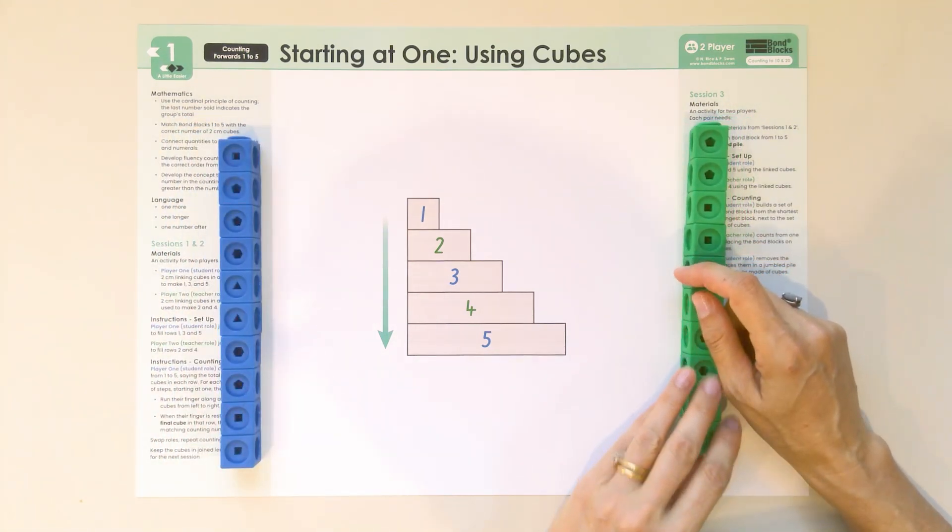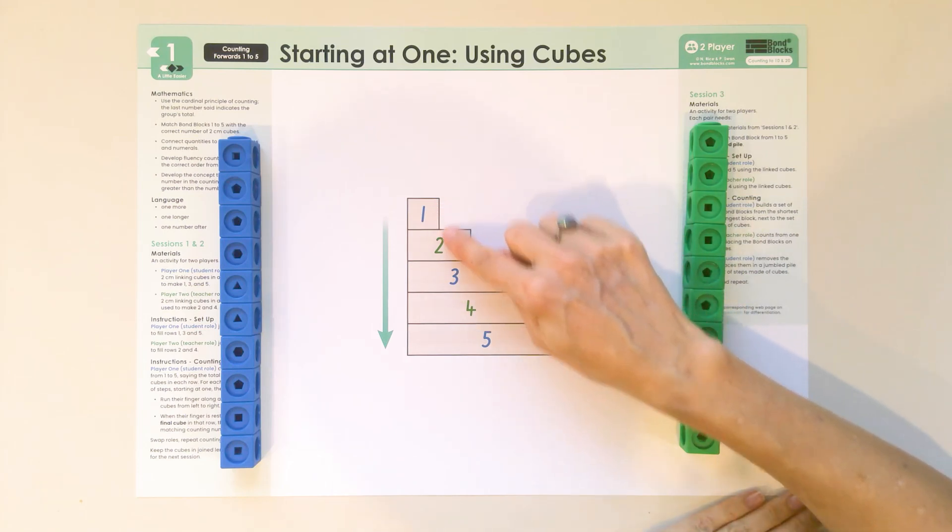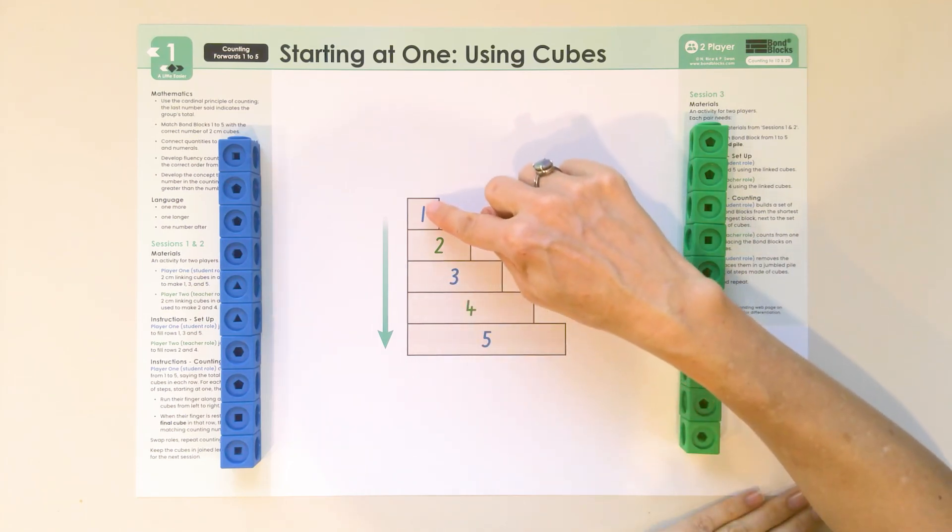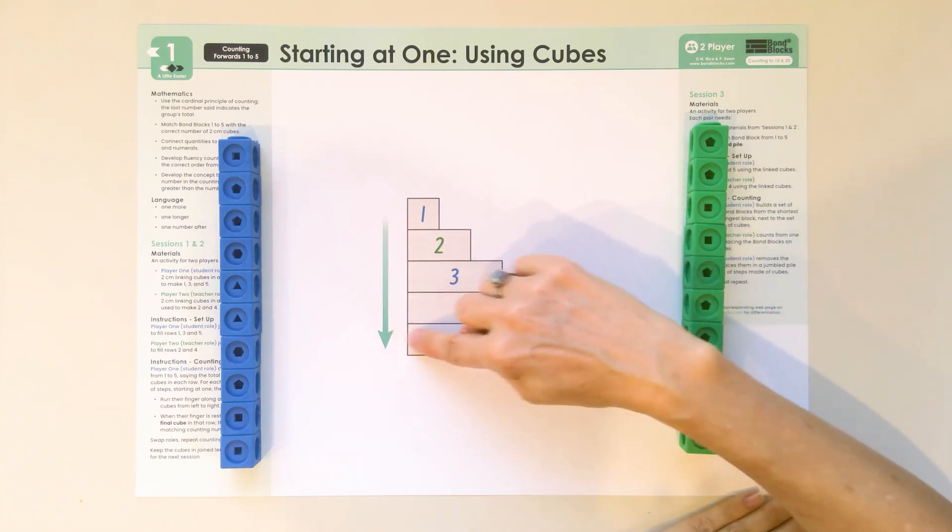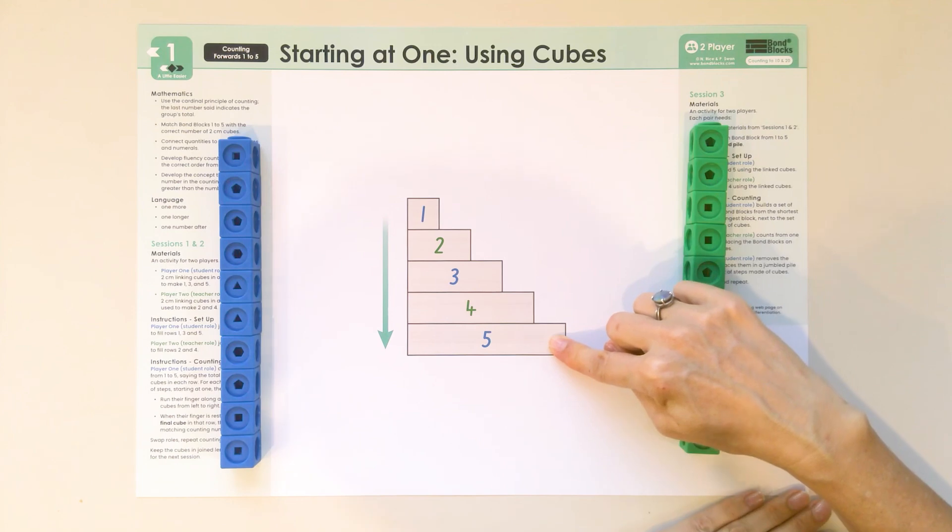Now Karis, we're going to work together to fill the set of steps, starting with the shortest row, these spaces going across, and filling down to the longest row.